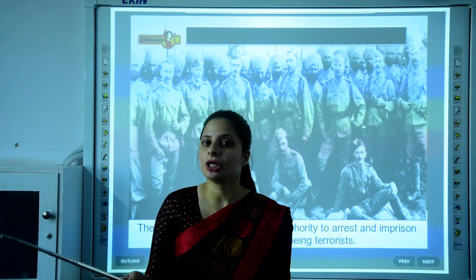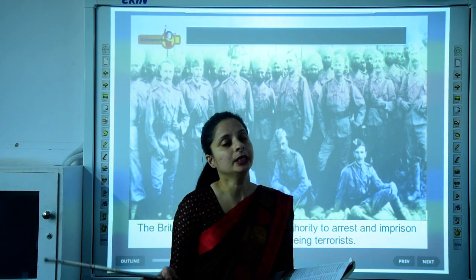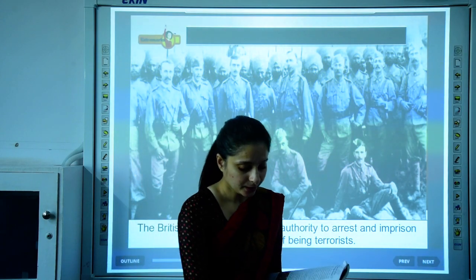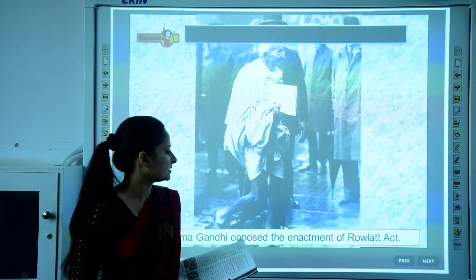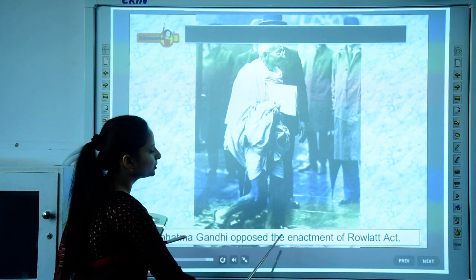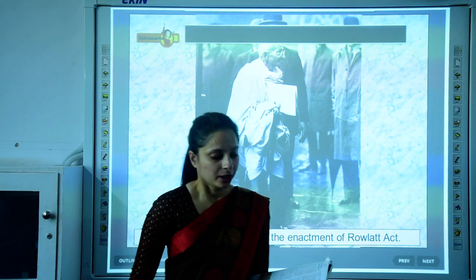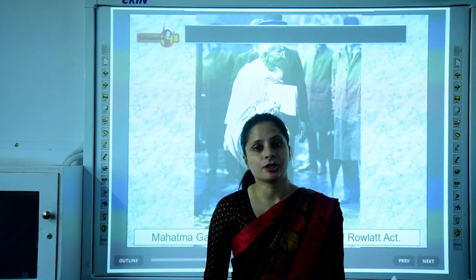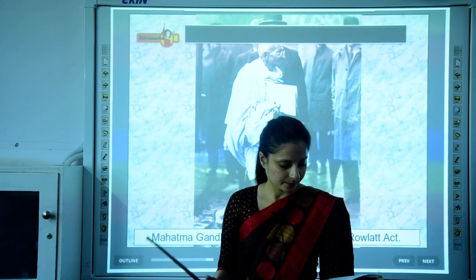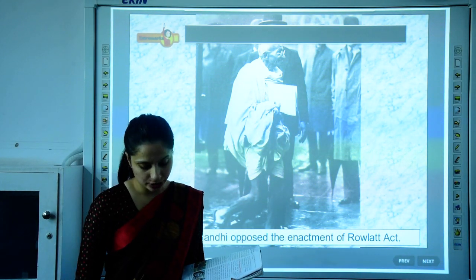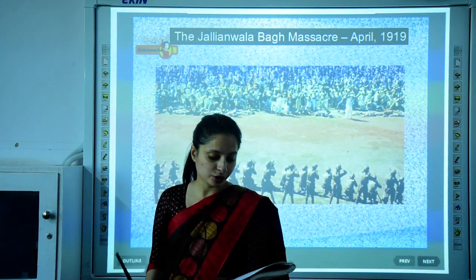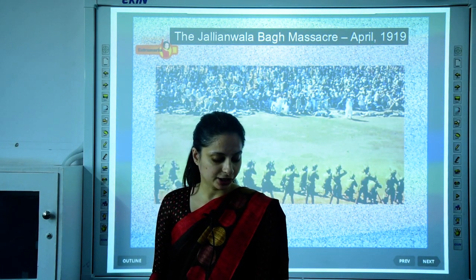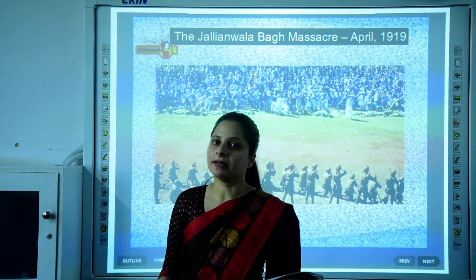Gandhiji launched the Satyagraha movement, which was based on the principle of truth and non-violence. He opposed the Rowlett Act, saying that people could not be arrested on baseless suspicions. He asked the people to oppose these laws, so demonstrations and meetings were held all over the country, and his Satyagraha movement gained a large number of followers.